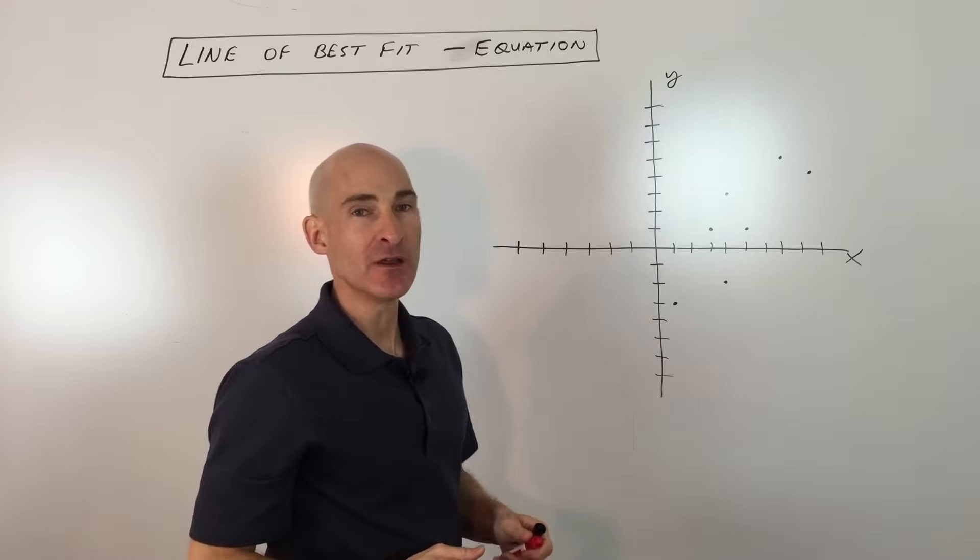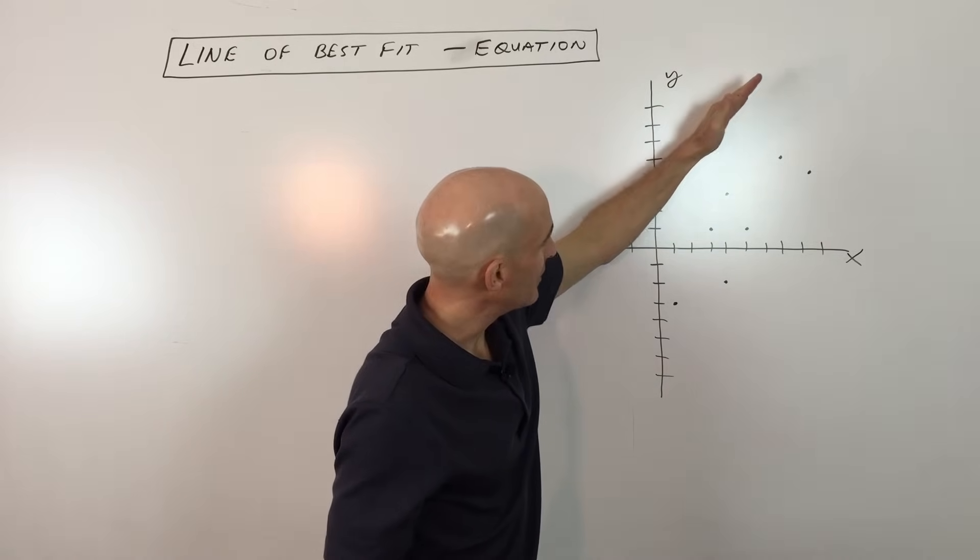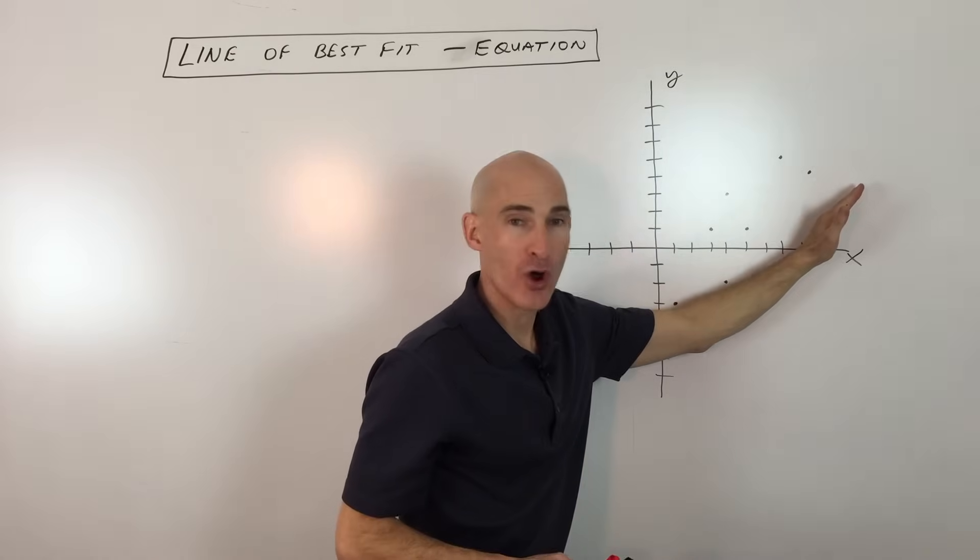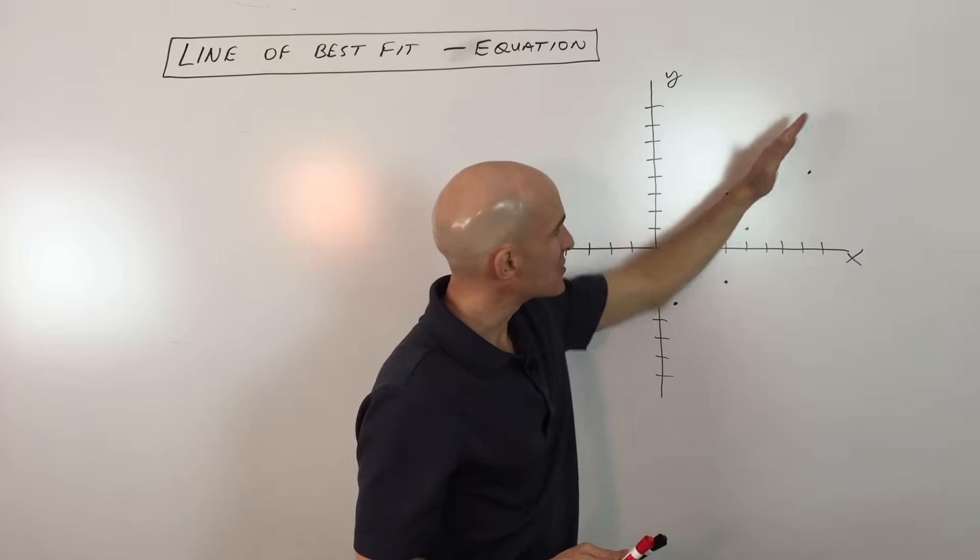the line to best fit. Well when you draw your line you don't want to draw your line so that it's so high that all the data points are below that line, and you don't want to draw it so low that all the data points are above that line. You want to draw it so it comes as close to those points as possible.